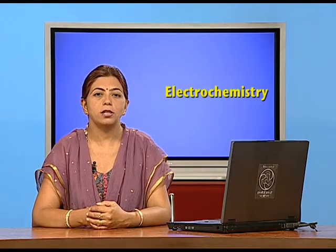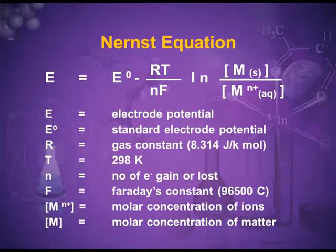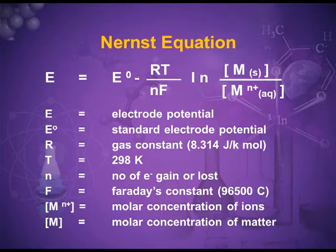But when the concentration is not unity, then how do we measure the electrode potential? Then we use the Nernst equation. The Nernst equation is: E equals E naught minus RT upon nF, times the natural logarithm of the concentration of the reduced state upon the concentration of the oxidized state.